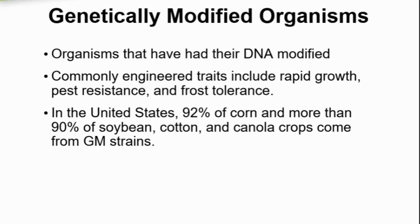Rapid growth, pest resistance, and frost tolerance are commonly engineered traits in crop plants. Animals can also be genetically modified. For example, goats have been engineered to give milk that can be processed into a drug that treats people whose blood clots abnormally.